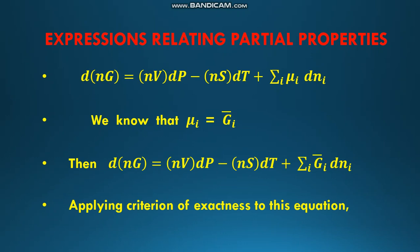The first equation we consider is d(nG) = nV dP − nS dT + Σ μ_i dn_i. We know that μ_i is equal to Z_i bar. Then this equation becomes d(nG) = nV dP − nS dT + Σ_i Z_i bar dn_i.